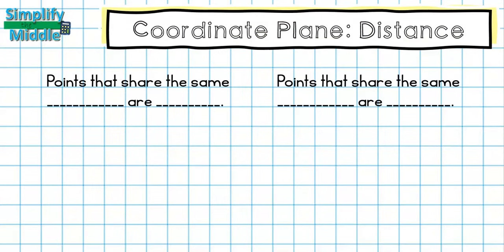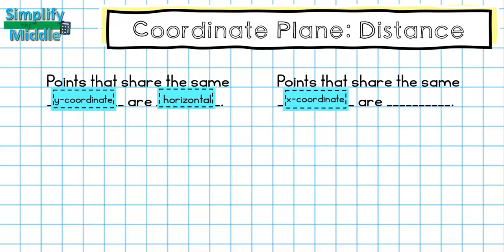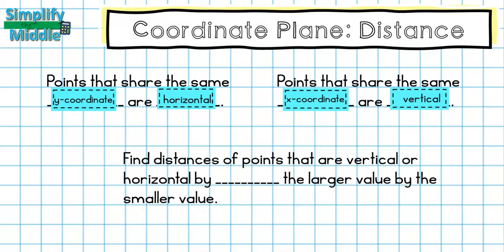Let's recap. Points that share the same y-coordinate are horizontal, and points that share the same x-coordinate are vertical. Finally, we know to find the distance of points that are vertical or horizontal, we will do that by subtracting the larger value by the smaller value.